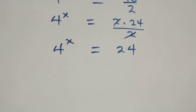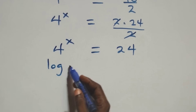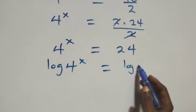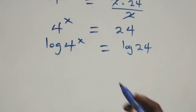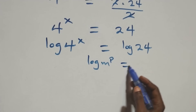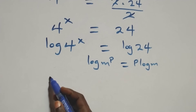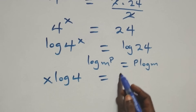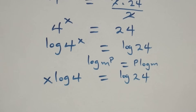Next step, we take the log on both sides. That is, we have log 4 raised to power x equals to log 24. Here we apply the power rule of logarithm: log m raised to power p is the same thing as p log m. That gives us x log 4 equals to log 24.